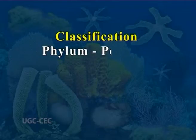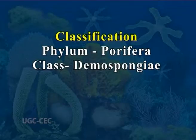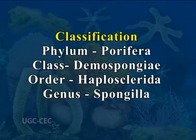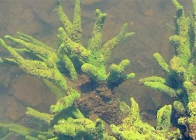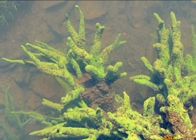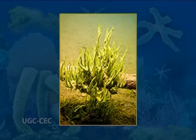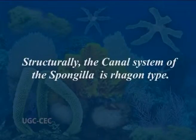Spongilla — Classification: Phylum: Porifera, Class: Demospongiae, Order: Haplosclerida, Genus: Spongilla. External features: it is richly found in ponds, lakes, and slow streams, growing on submerged sticks and plants. Spongilla is probably the best known of freshwater sponges. They are usually yellow, brown, or green in color from the presence of unicellular algae, zoochlorellae, living in the tissue. The colony is profusely branched. Structurally, the canal system of Spongilla is of the rhagon type. Several small dermal pores (ostia) are scattered over a very thin dermal membrane overlying large subdermal cavities.